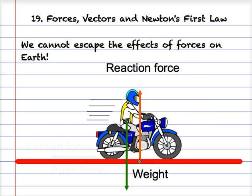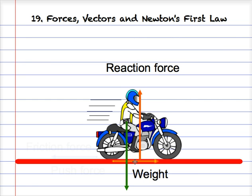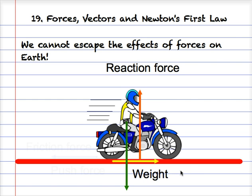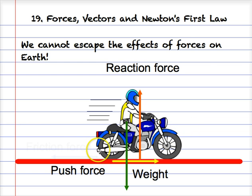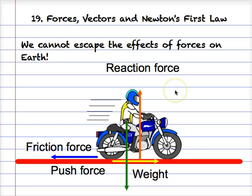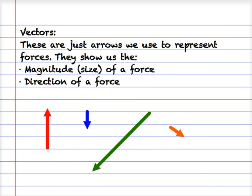The motorbike is riding forwards so there must be a push force from the engine propelling the bike forwards. But if the motorbike is going through the air and on the ground, there must also be a friction force. So in this simple example there are at least four forces on the motorbike: weight downwards, reaction force upwards, push force propelling the motorbike forwards, and friction force trying to slow the motorbike down.